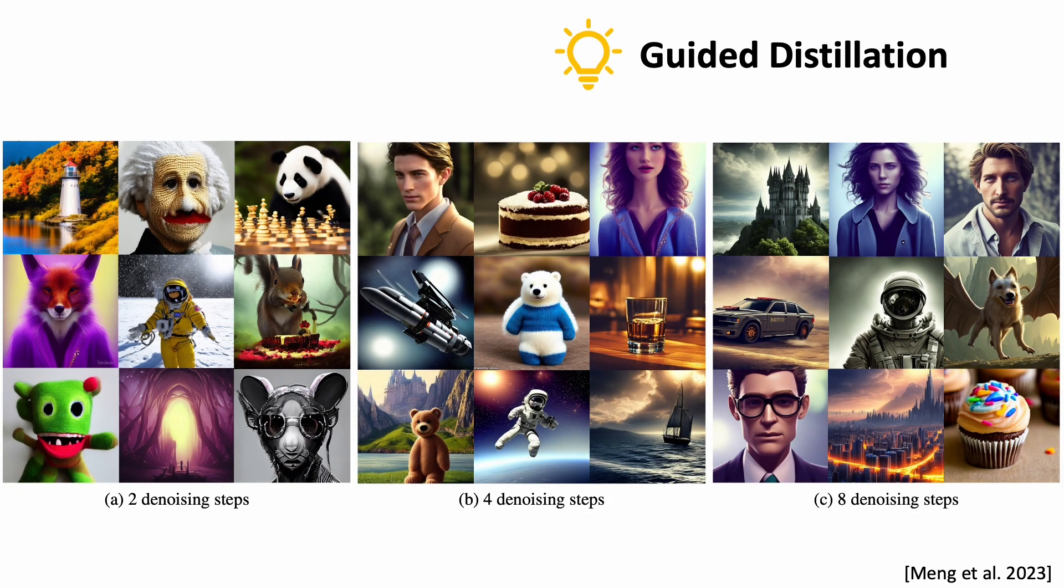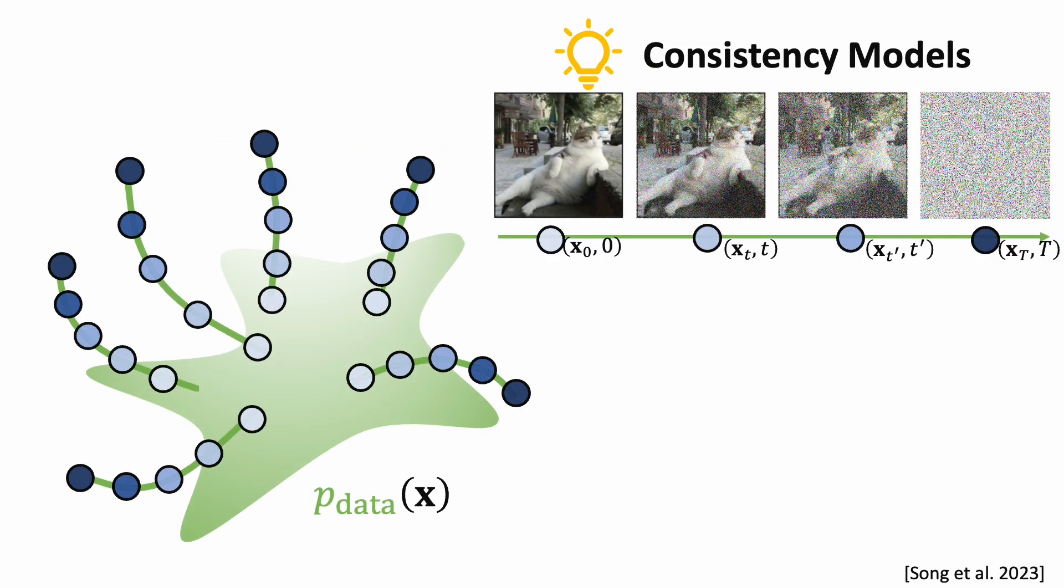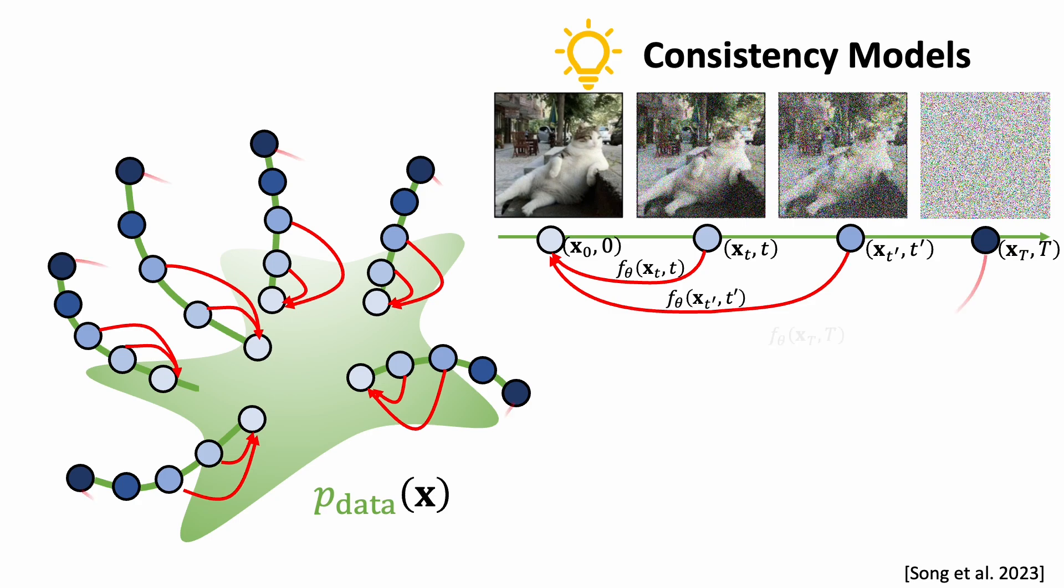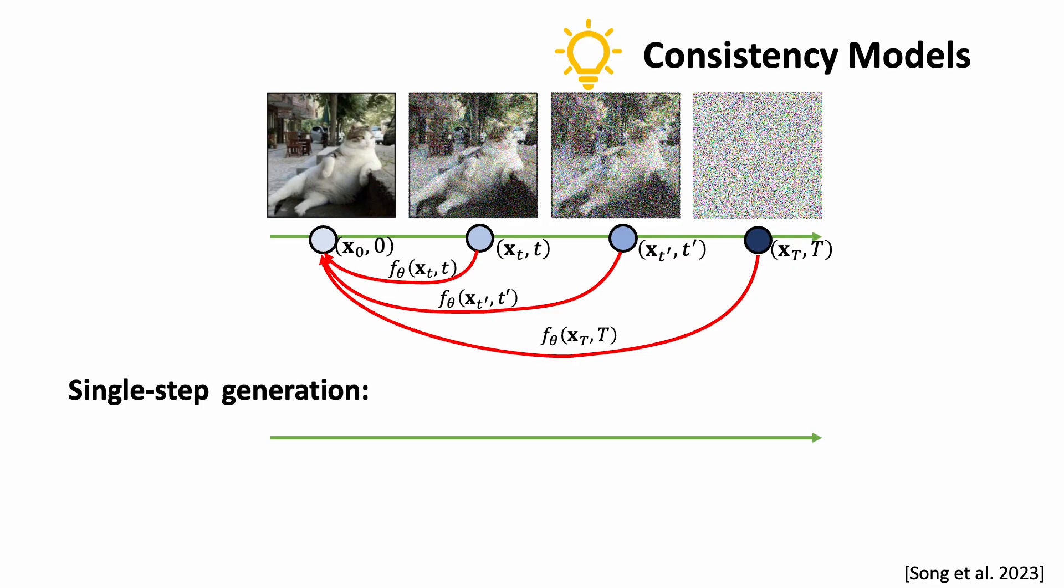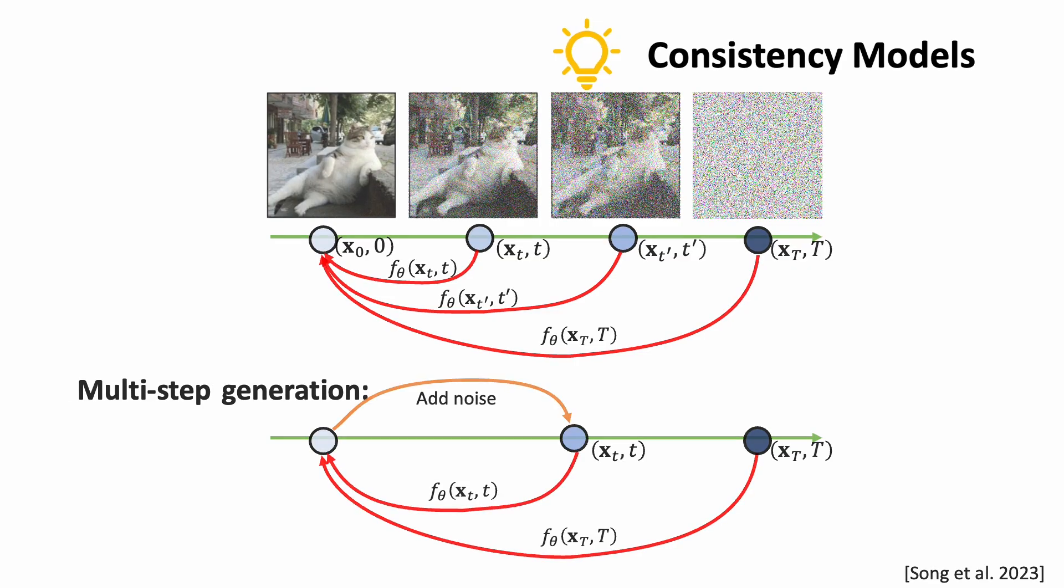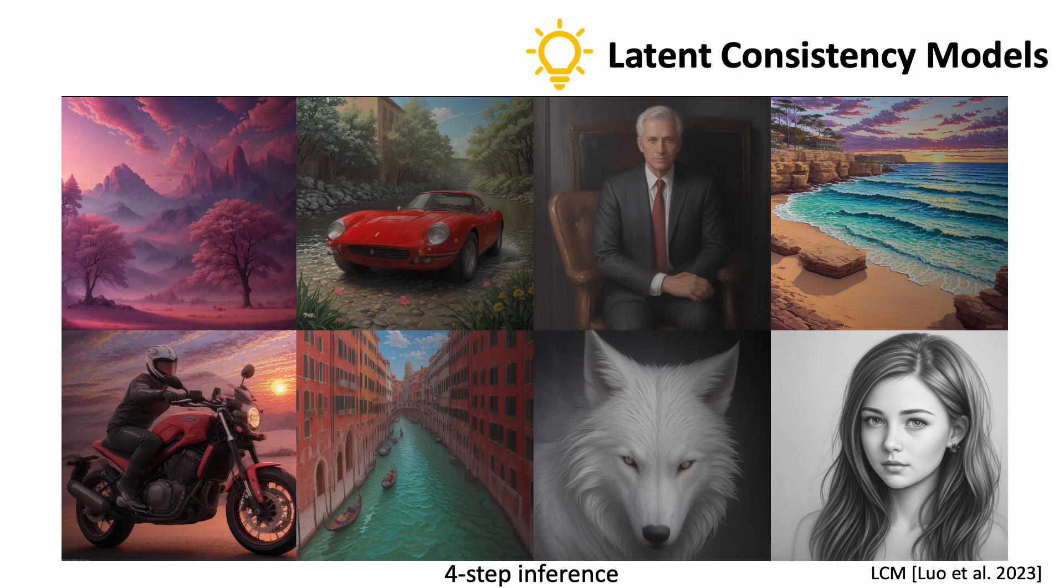We can distill a pre-trained denoising network using consistency models. The main idea is to train the model so that for any points on the path, the model predicts the same origin. This supports single-step generation, as well as multi-step generation. Applying consistency distillation in the latent space gives us high-resolution image generation using only a few steps.